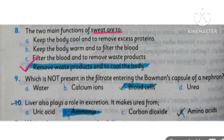The next MCQ: which is not present in the filtrate entering the Bowman's capsule of the nephron? The answer is blood cells. The next MCQ: the liver also plays a role in excretion — it makes urea from ammonia.